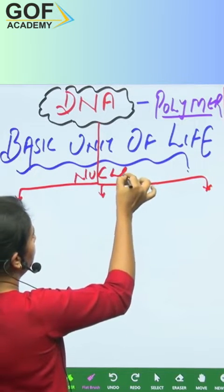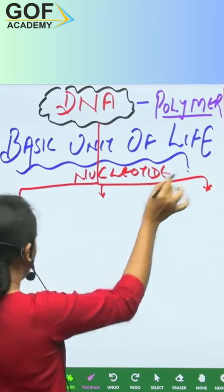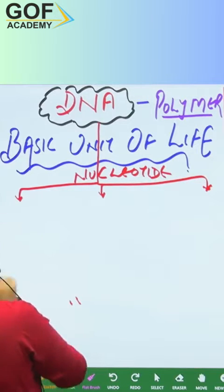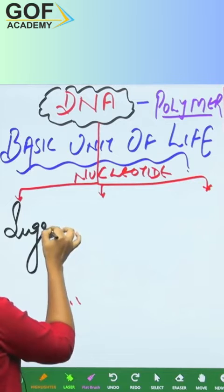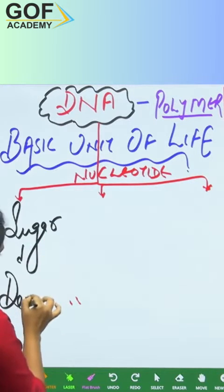The nucleotide itself is made up of three main components. Number one: sugar. Which sugar? Deoxyribose sugar.